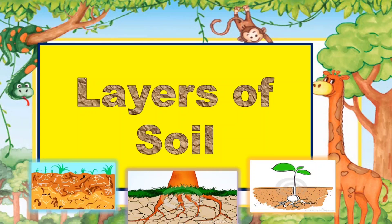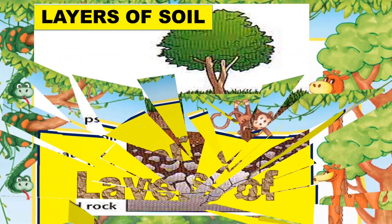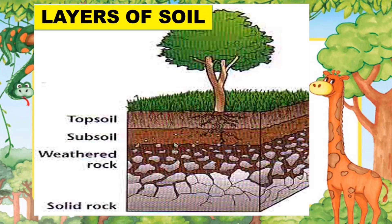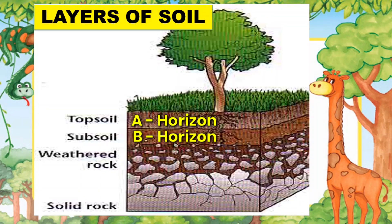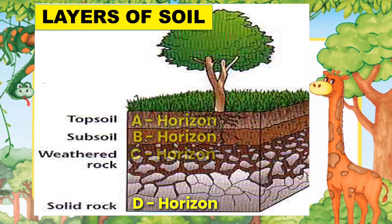Layers of Soil. The uppermost layer of soil is the topsoil, known as the A horizon. Under the topsoil is the subsoil, known as the B horizon. Under the subsoil is the weathered rock, or the C horizon. And the last one is the solid rock, known as the D horizon.